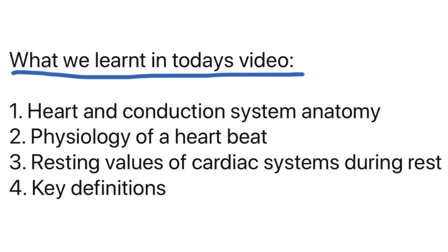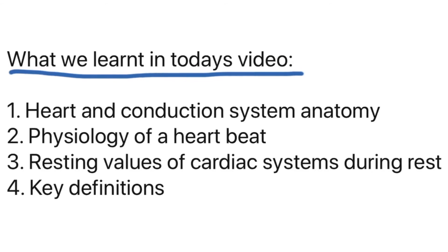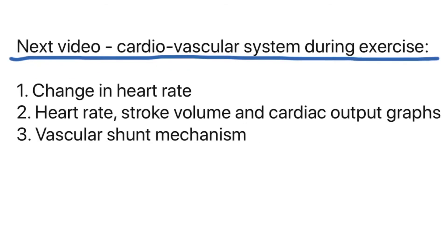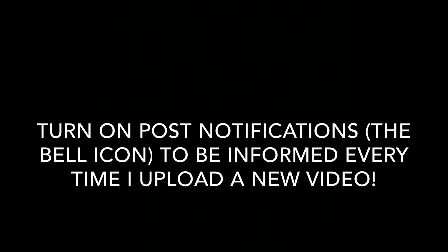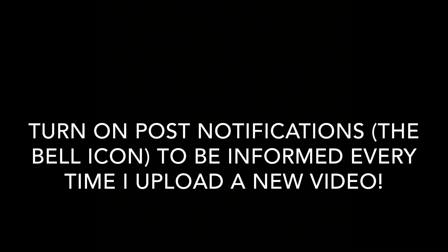What we have learnt in today's video is the heart and conduction system anatomy, the physiology of a heartbeat, the resting values of cardiac systems, and some key definitions. Moving into the next video, we are going to look at the cardiovascular system during exercise — including how heart rate changes, heart rate, stroke volume and cardiac output graphs, and the vascular shunt mechanism. Thank you all for watching. Please subscribe if you haven't already, and I will see you in the next video.